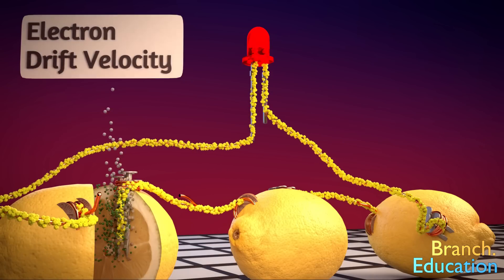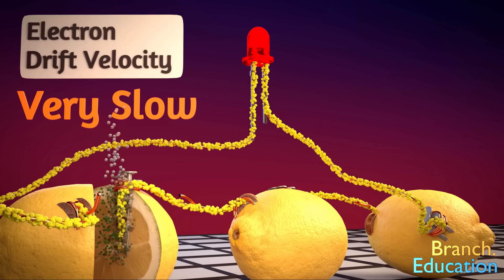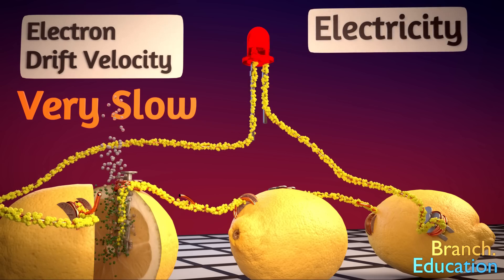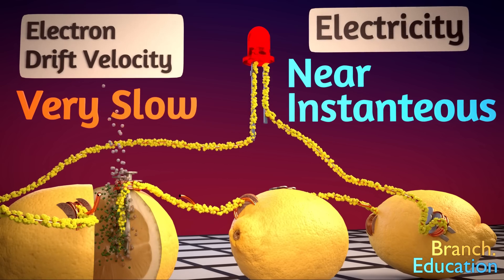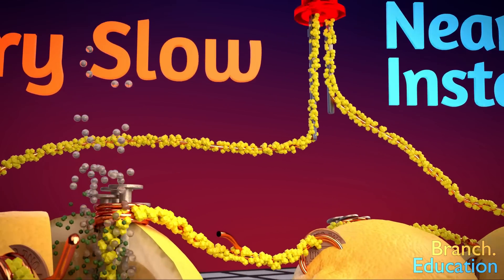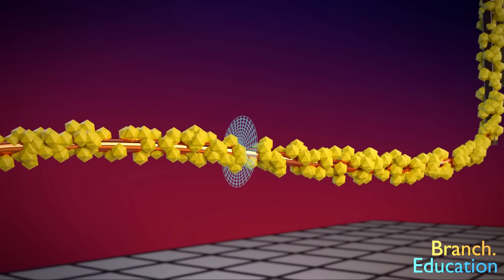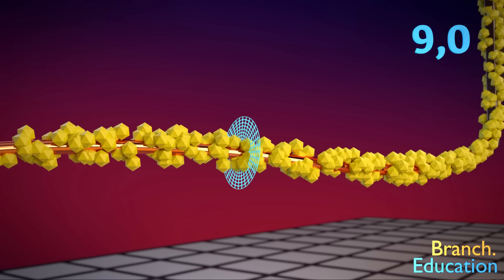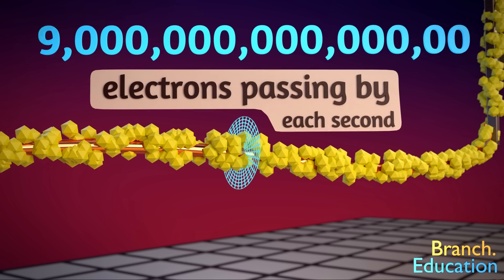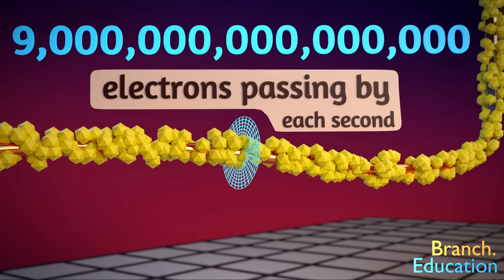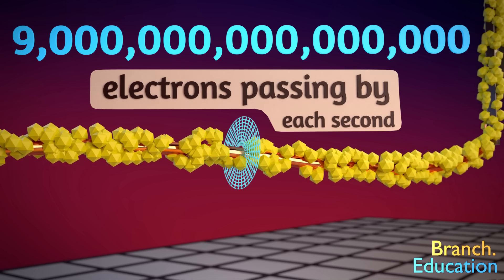Electrons may move unbelievably slow themselves, however the force that propagates is near instantaneous. Also, let's be real, it's not just two electrons that are passing by this cross section of wire. The number is closer to 9 quadrillion electrons per second, which is 1.4 milliamps of current.